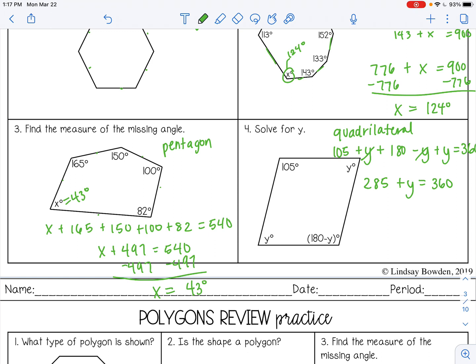Alright, and then I'm going to subtract 285 from both sides. So y equals 75. Alright, you can stop the video now and complete your practice.